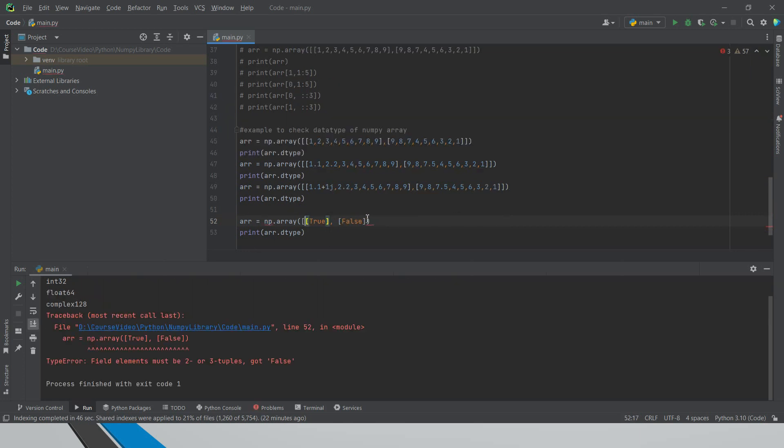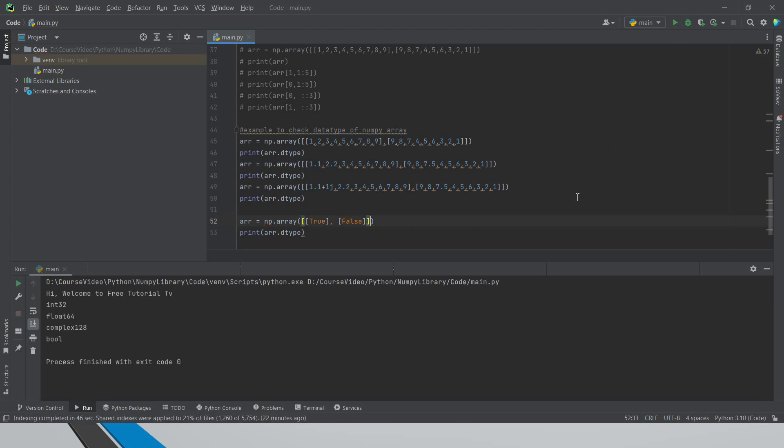Whether I need to put it within these double items. Yes, it's a boolean. So I just missed one square bracket. That is why we are getting that error. Fine. So this is how we find the data types.